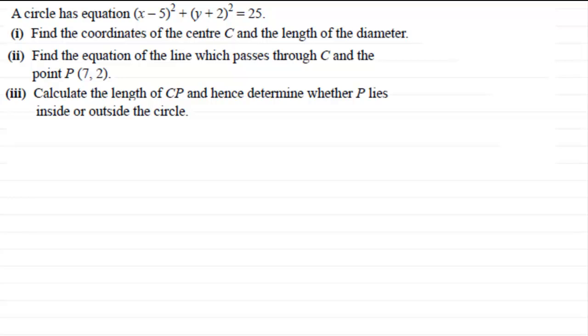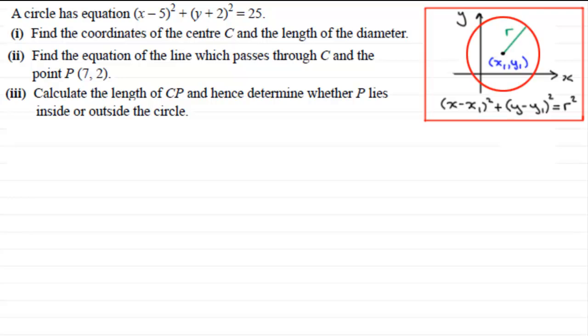Well, just as a reminder about the equation of a circle, the equation of a circle with radius r and centre (x₁, y₁) is given by (x - x₁)² + (y - y₁)² = r². And you should be familiar with this. If not, there's plenty of tutorials on my website on this. So let's just start then with part one.